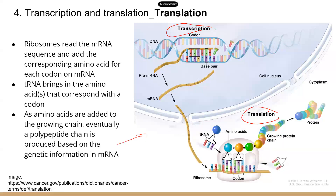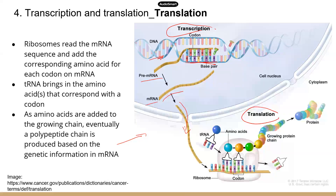Just a quick recap: in the nucleus, that's where transcription happens. You have DNA, you open up the two DNA strands, and then you use the template strand to make mRNA using the base pairing principle. Eventually you have a mature mRNA molecule that can go through the nuclear pores, come out of the nucleus, and deliver that genetic information to ribosomes.